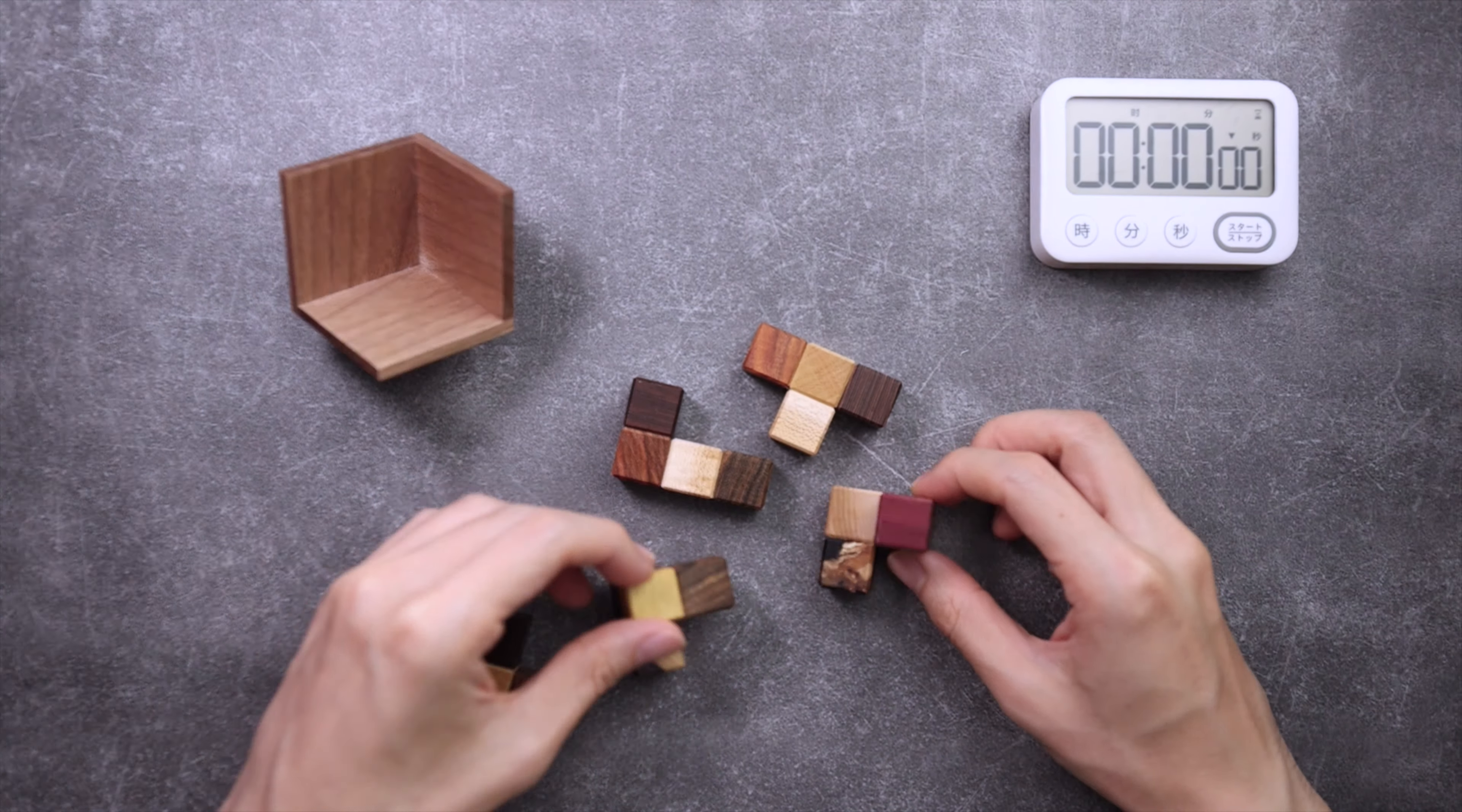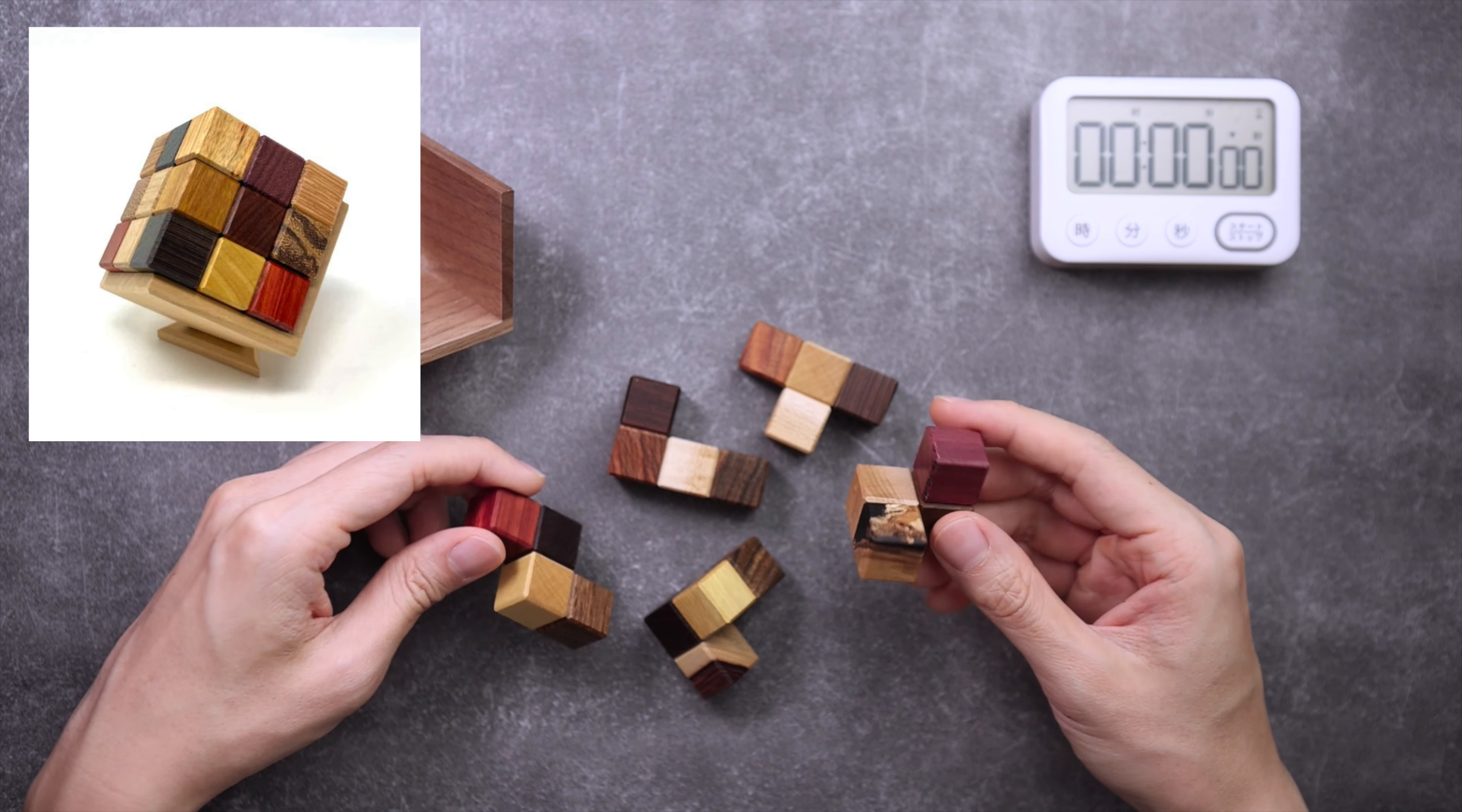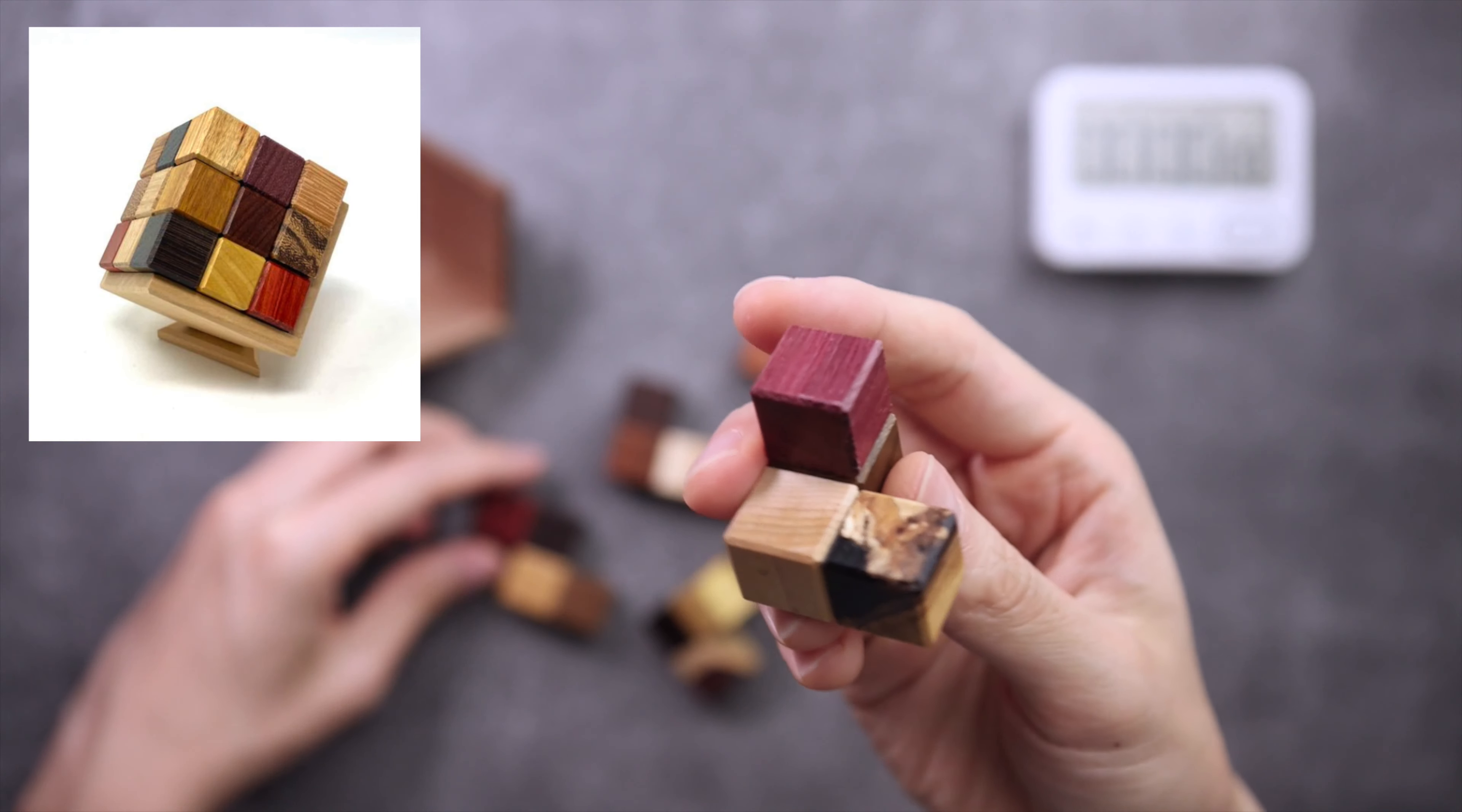The goal is to make an apparent complete soma cube, which means a 3x3x3 cube freestanding on the stand without collapsing.